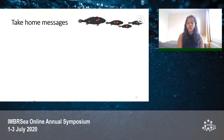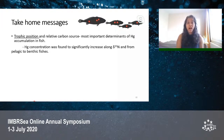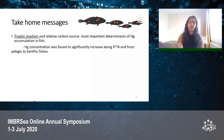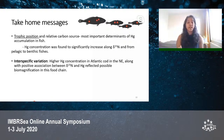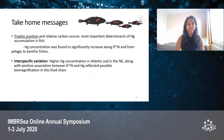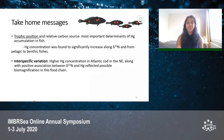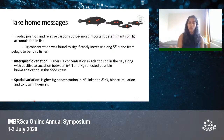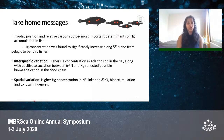In conclusion, we found that trophic position and relative carbon source are the most important determinants of mercury accumulation in fish. Mercury was found to significantly increase along delta-15N — that is, along trophic levels — and from pelagic to benthic fishes. We found inter-specific variation with Atlantic cod having higher mercury concentrations in the northeast, reflecting possible biomagnification in this food chain. We also found spatial variation, with individuals from the northeast having higher mercury levels than those from the northwest, linked to larger delta-15N values, larger size leading to bioaccumulation, and variations in local influences.